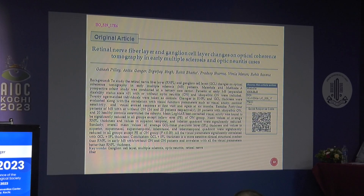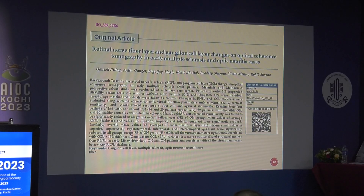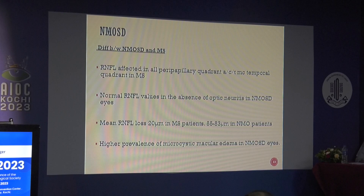Another important publication I was part of assessed RNFL layer and GCL thickness changes on OCT in early multiple sclerosis patients. We found that GCL thickness is a more sensitive clinical parameter than RNFL, especially in early MS patients and optic neuritis spectrum patients. GCL also correlates better with visual parameters compared to RNFL.